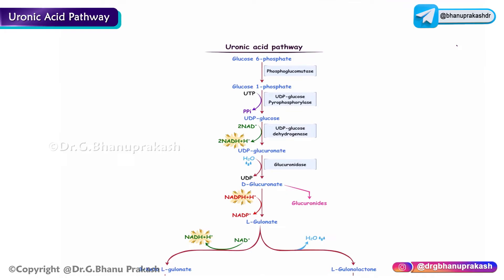In today's video we are going to discuss one of the minor pathways of carbohydrate metabolism, which is the uronic acid pathway. The uronic acid pathway is an alternative oxidative pathway for glucose. Generally, glucose enters into glycolysis.